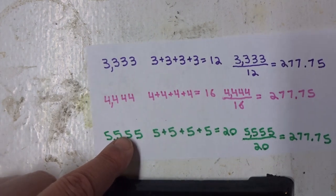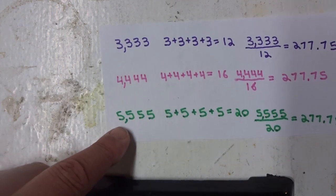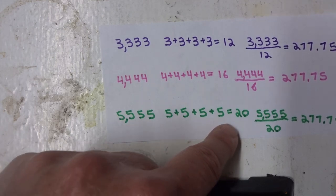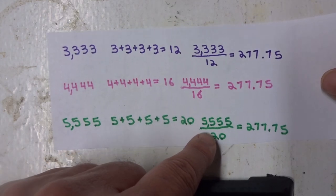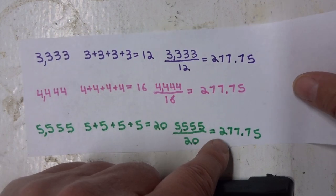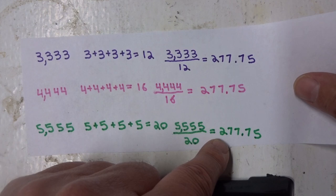And we can try that with 5. 5,555. Add the fives together, and we get 20. 5,555 divided by 20, once again, equals 277.75.